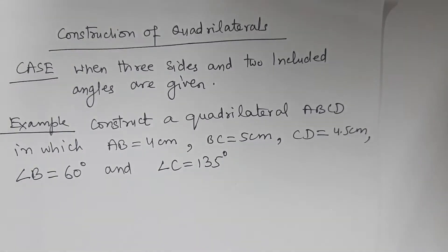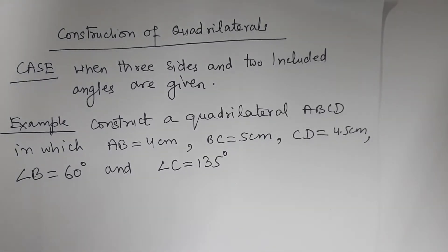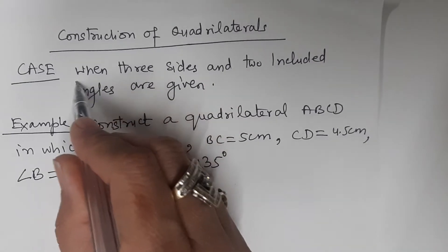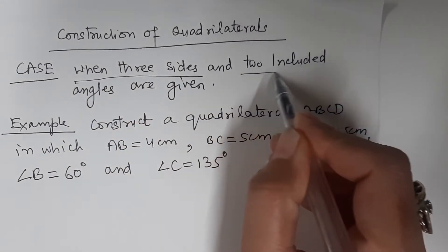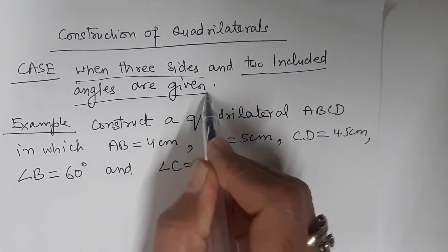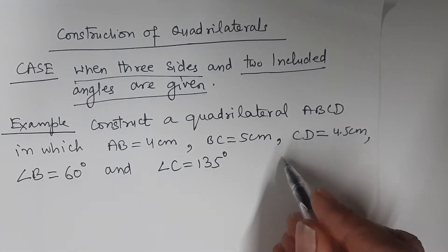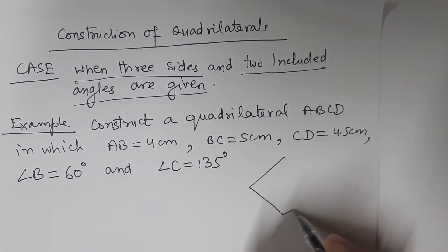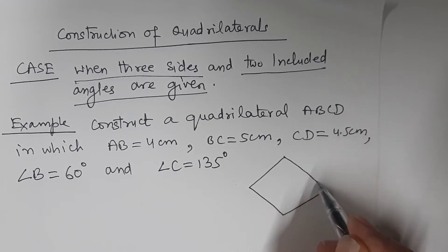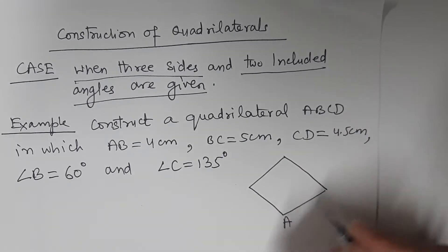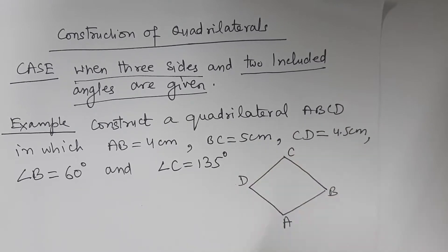Let us discuss this question on the chapter Construction of Quadrilaterals. This is a special case of constructing a quadrilateral when three sides and two included angles are given. A quadrilateral is a polygon having four sides. Here I am making a rough sketch ABCD.